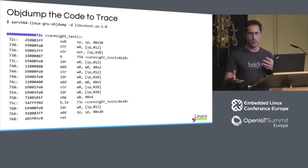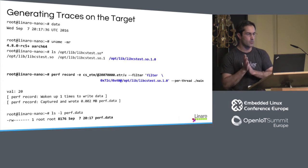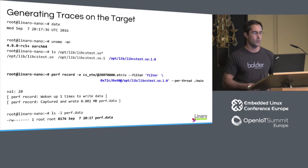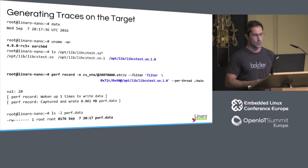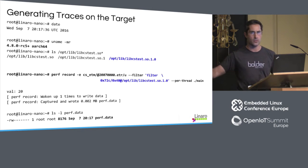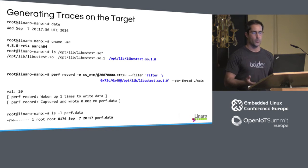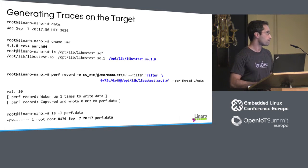With this information we go back to the target. We specify cs_etm and the sink we want to use, select user space tracing, use the filter keyword, and specify the filter: 0x72c, 40 bytes, and the full path to the library on the system. Perf will interact with the PMU, which will start tracing when the process is scheduled on the CPU. At the end of the session you end up with a perf.data file, and at the bottom of the screen we can see that Perf picked up about 8K worth of data. It's that simple.